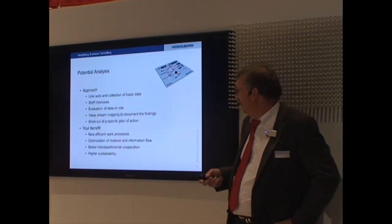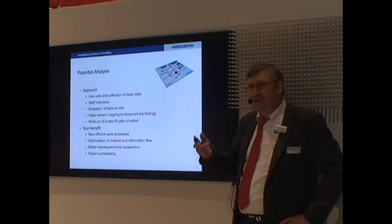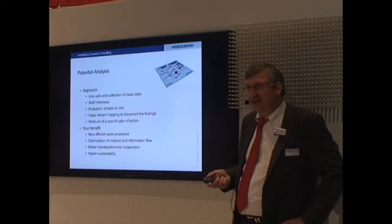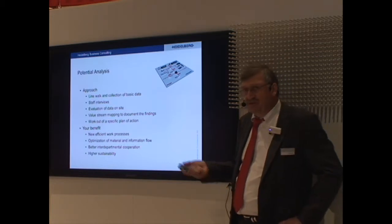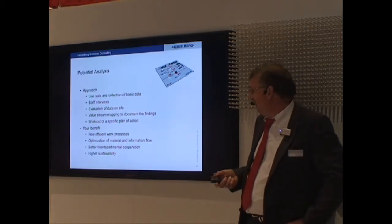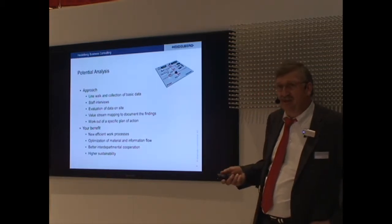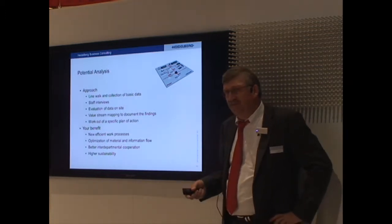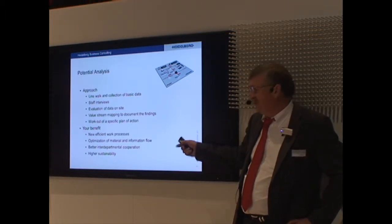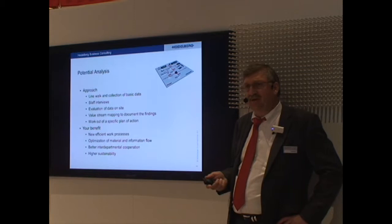What is the approach? We do a line walk. We walk along the process, we look at the process and we examine it and we note everything that we find. We have the staff interviews, the evaluation is done on-site in your company. We use the method of value stream mapping to describe and to identify the improvement areas. And we work out a specific plan of action. With this specific plan of action, you have the possibility for a higher sustainability. We work out a new efficient process. We do an optimization of your materials and your information flow. And we have a better cooperation, interdepartmental cooperation in your company.